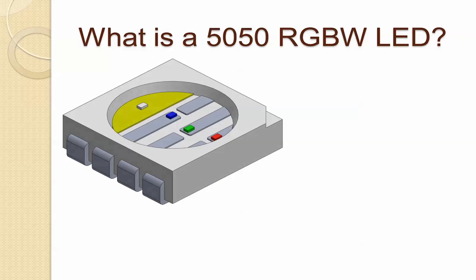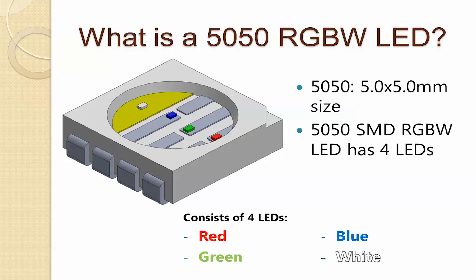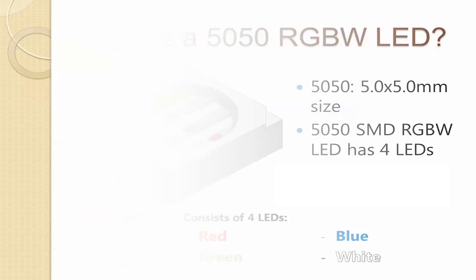First of all, let's talk about what is a 5050 RGBW LED. 5050 stands for the size, which is 5 by 5 millimeters, and RGBW means you're going to have four LEDs in one single enclosure — your RGB LEDs and your white LED. This is a surface mount device, a very small electronic chip that you can also put on a PCB.